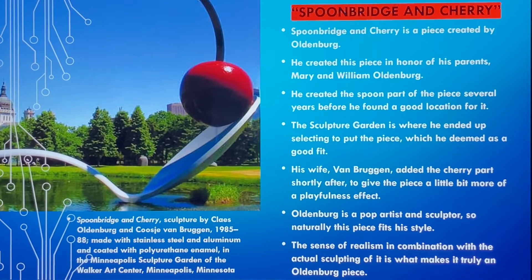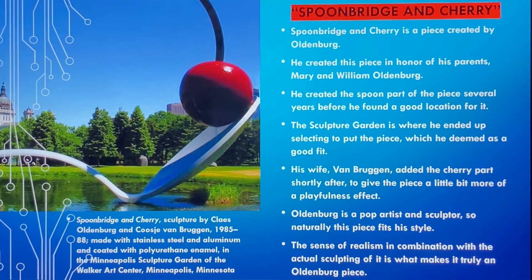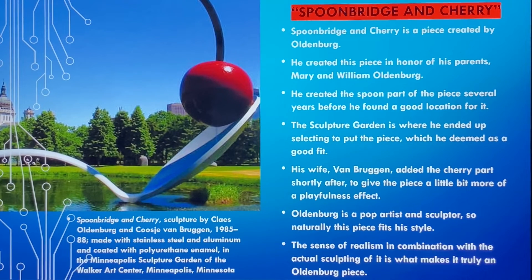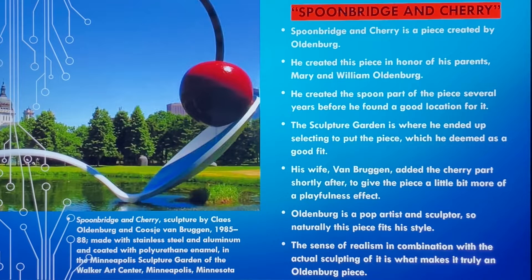The first example of one of his pieces is called Spoonbridge and Cherry. This is a piece he made in honor of his parents — his mom, Mary, and his dad, William. He had created the spoon part several years before finding a good location for it. He was inspired by the fact that when he was younger he used to draw spoons on a table a lot, so eventually he decided to make a full-blown sculpture of a spoon. After years of deciding on a location, he settled on the sculpture garden, which seemed like a really good fit. His wife, van Bruggen, was the one who added the cherry part shortly after, because it gave the piece a little more of a playful feel.